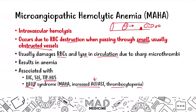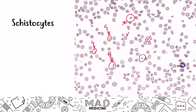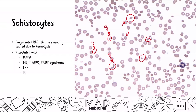On the peripheral blood smear, you're going to see schistocytes. Schistocytes are lysed red blood cells — fragments with irregular shapes due to damage to their cell membrane, distinct from normal red blood cells with central pallor. These fragmented RBCs are caused by hemolysis and are associated with many conditions, including paroxysmal nocturnal hemoglobinuria. Mechanical hemolysis can also occur due to a prosthetic heart valve, which can lyse red blood cells and cause anemia.